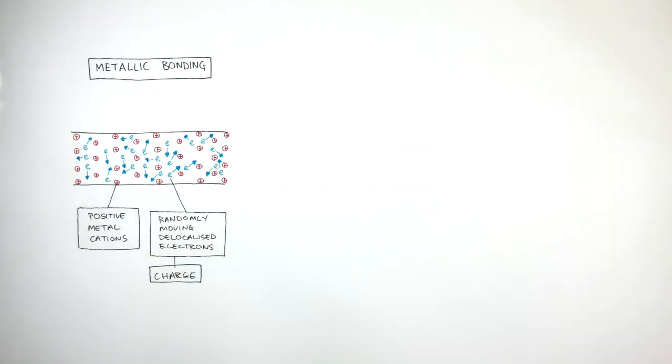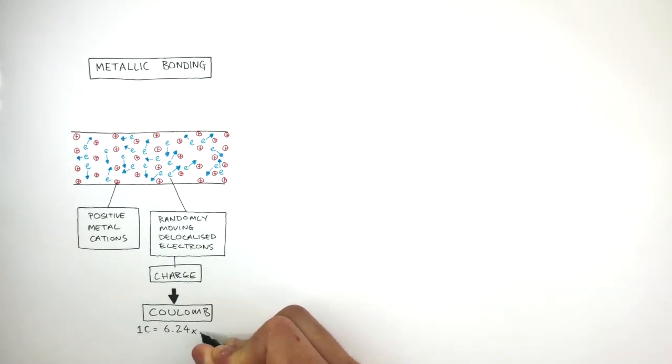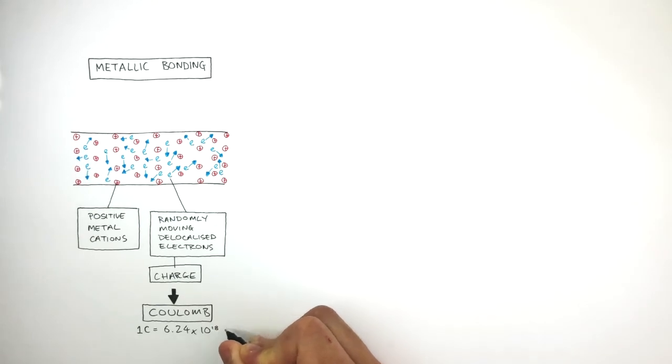So we use charge to quantify a very large number of electrons. The unit of charge is a coulomb. One coulomb is equal to 6.24 times 10 to the power of 18 electrons.